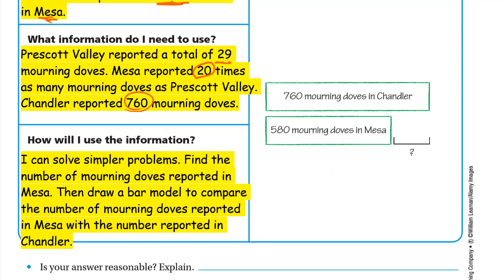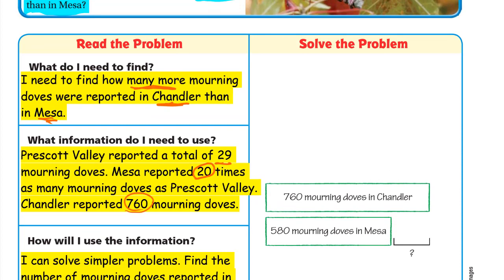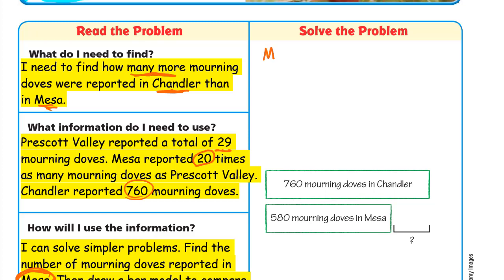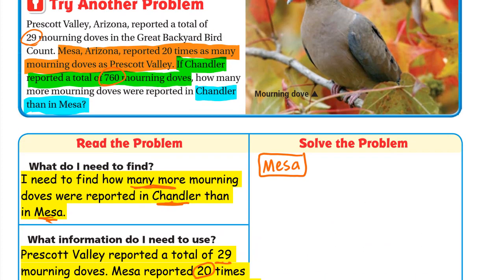How will I use the information? First, find the number of mourning doves in Mesa by multiplying 20 times 29, since the problem says Mesa had 20 times as many as Prescott Valley. Then draw a bar model to compare Mesa's count to Chandler's count — comparing means we'll subtract.